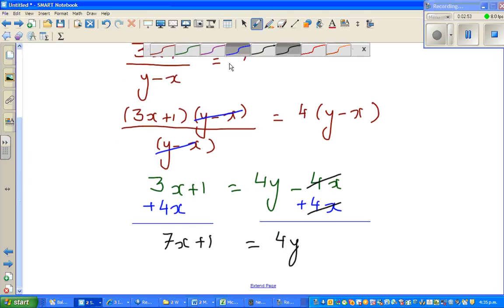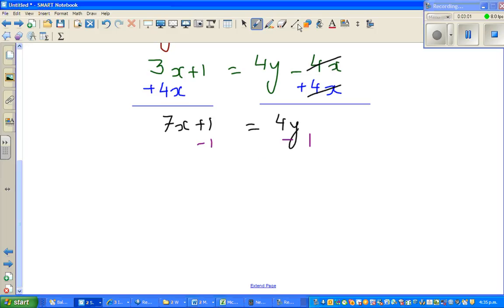Now if I take away 1 from this side, I will take away 1 from this side. These are the two sides of the equation. This and this will get cancelled. You've got 7x equals 4y - 1.